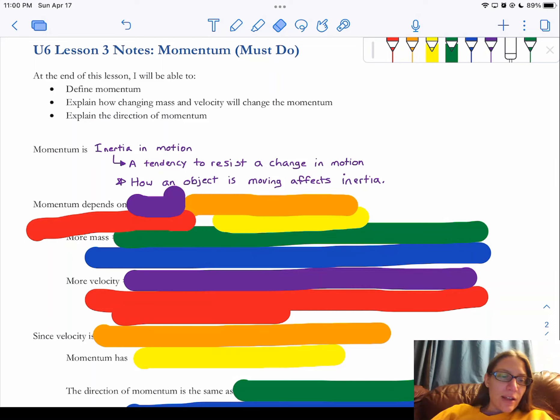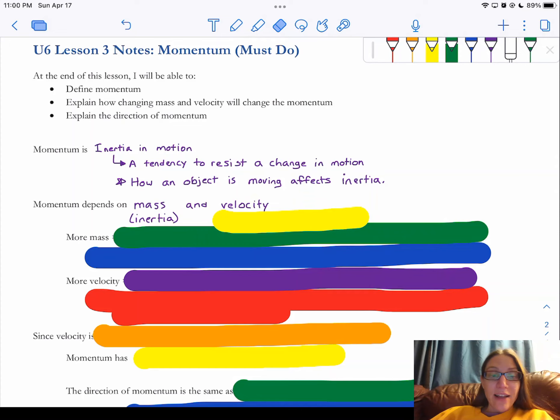So momentum depends on a couple of things. Momentum depends on mass, because that's what inertia depends on. Remember, mass is the inertia part. And momentum also depends on how fast something is going. And that's how it's moving. That's the motion part.